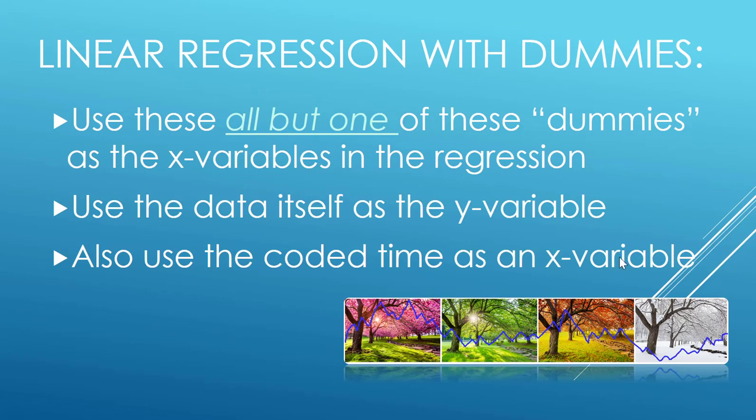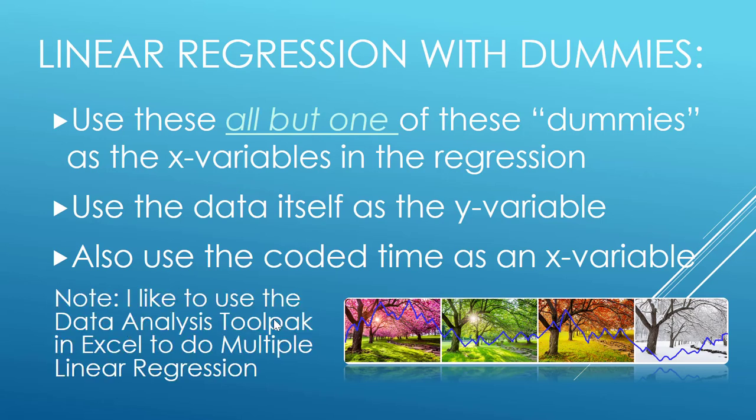Then we use a coded time as an x variable as well. By coded, that means for each time period we assign a number starting at zero, so our first period we call the coded time value zero, and then one, two, three, and so on. I like to use the Data Analysis Toolpak in Excel, it comes standard whether you have Excel for Mac or Windows.